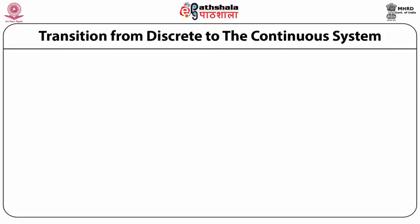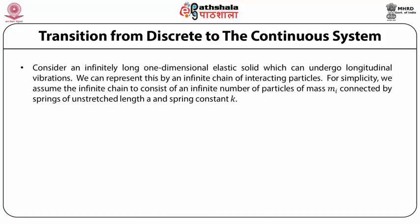Let us study the transition from discrete to the continuous system. Consider an infinitely long, one-dimensional elastic solid which can undergo longitudinal vibrations. We can represent this by an infinite chain of interacting particles. For simplicity, we assume the infinite chain to consist of an infinite number of particles of mass m_i connected by springs of unstretched length a and spring constant k. The one-dimensional elastic solid is also shown diagrammatically in the figure.